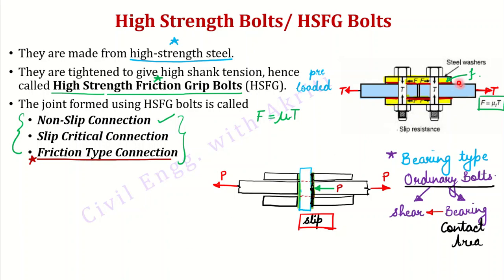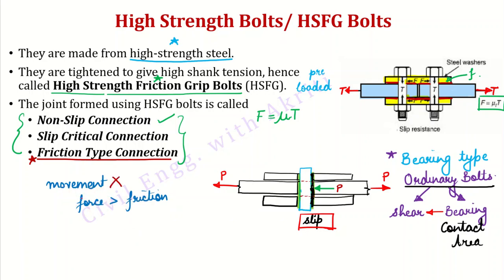To overcome this friction is the challenge. T acts as the normal force at the interface, so friction is mu × T. The bolt will not slip as long as the friction is not overcome. This is the basic concept of friction — for movement to occur, the applied force must exceed the frictional force. By making friction very large, we prevent any movement. That is why this connection is called a no-slip connection.